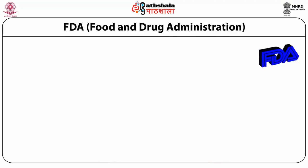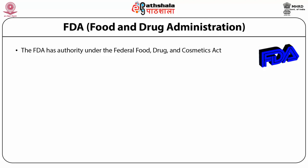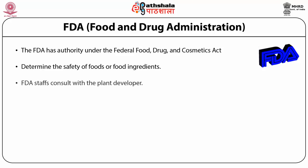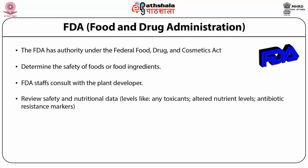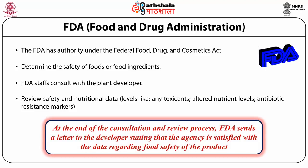The Food and Drug Administration (FDA) works under the Federal Food, Drug, and Cosmetic Act, which determines the safety of food and food ingredients. FDA staff consult with plant developers and review safety and nutritional data at the toxicity level, nutrient level, and antibiotic resistance level. At the end of this process, the body sends a letter to the developer stating that the agency is satisfied with the data regarding the food safety of the product.